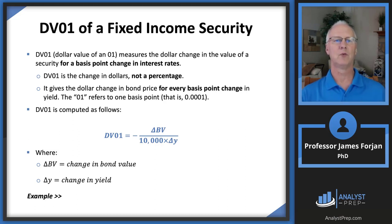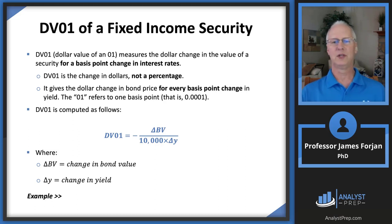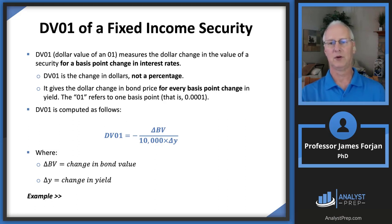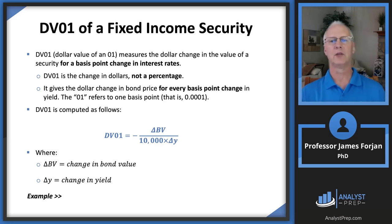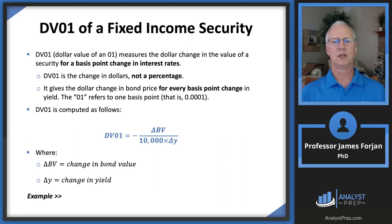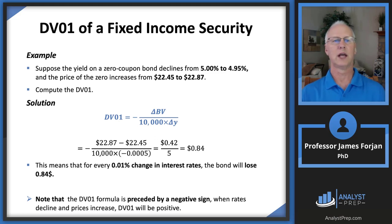To measure the dollar value of a one basis point change, we measure ratios of sensitivity. In the numerator, we have the change in the value of the bond — bond value — divided by the change in the yield, which is 0.0001. Because we have all those decimals, we multiply by 10,000 in the denominator.